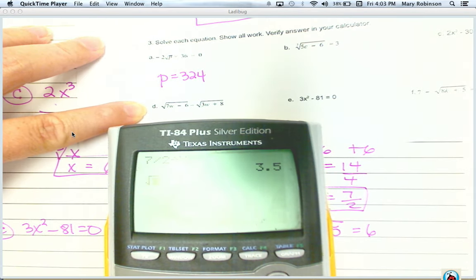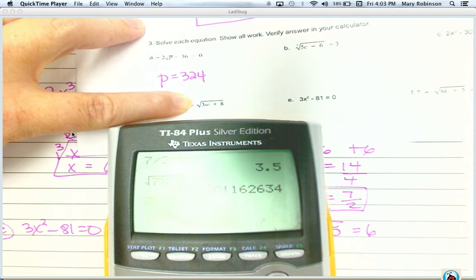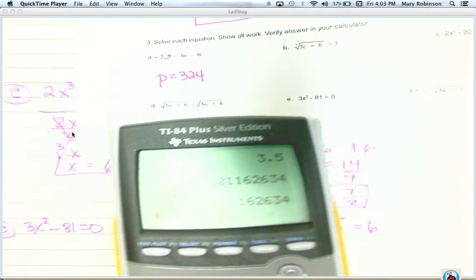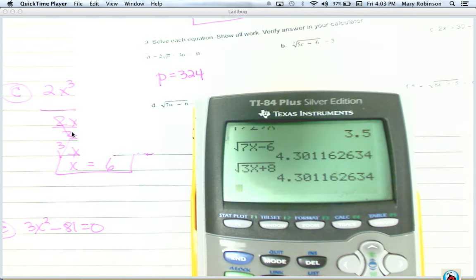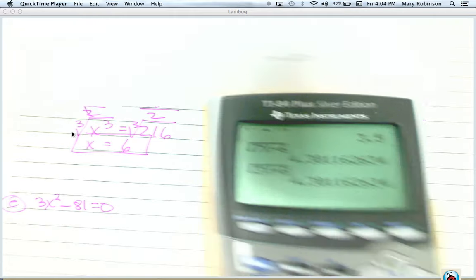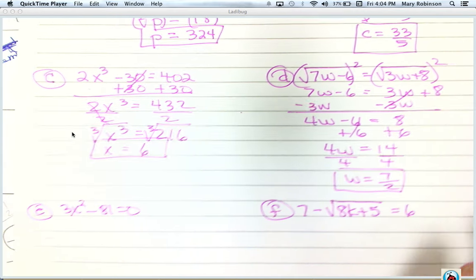So square root of 7x minus 6. Hit enter. Square root of 3x plus 8. Hit enter. They do match. They do match. Sorry. Couldn't see that with a reflection. So that means that our answer of 7 halves does work.